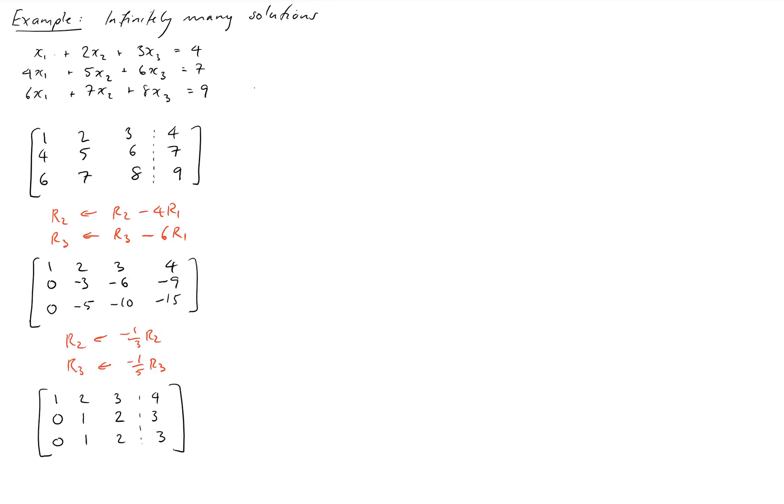Okay, and last off, we can see that we can subtract row 2 from row 3. So we'll do the operation row 3 becomes row 3 minus row 2, which gives us the matrix 1, 2, 3, 4, 0, 1, 2, 3, and 0, 0, 0, 0.